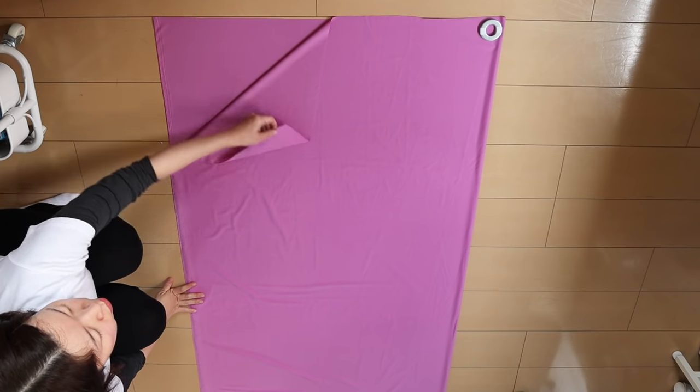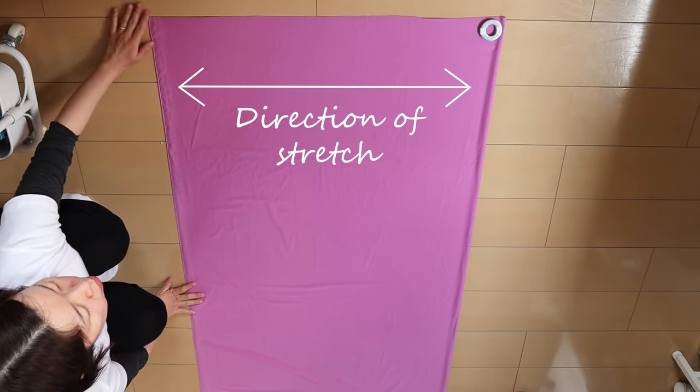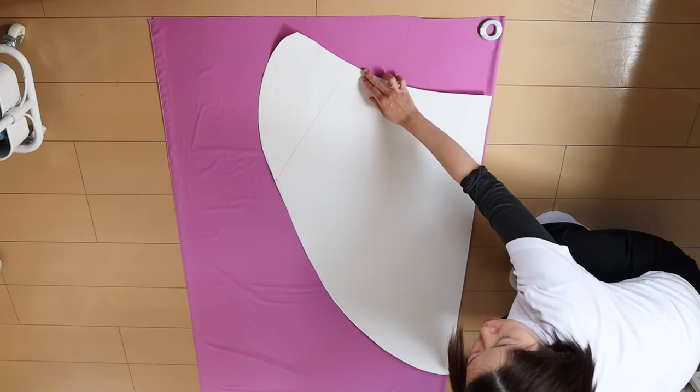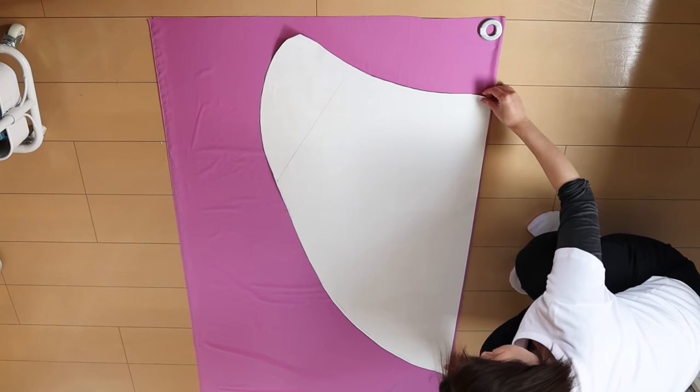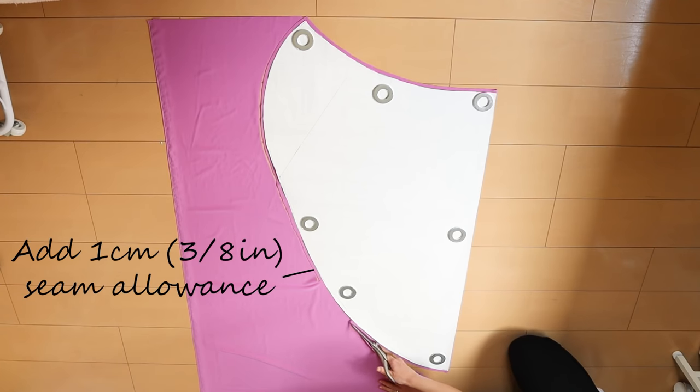Fold your fabric right sides together. If you're using stretch fabric, the direction of stretch should be perpendicular to the fold of the fabric. Place the pattern on the fabric and align the straight edge against the fold. And cut while adding a 1 centimeter or 3 eighths of an inch seam allowance.